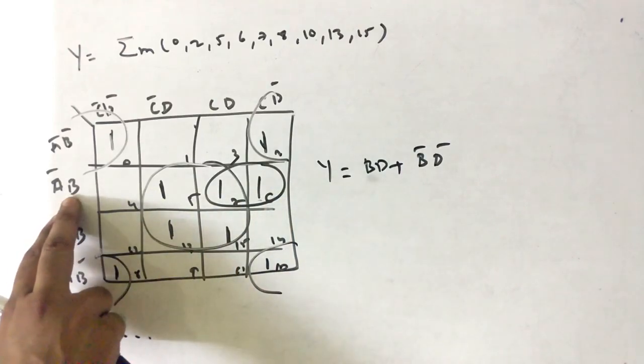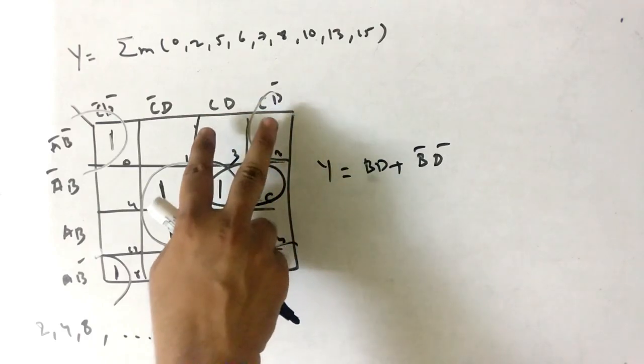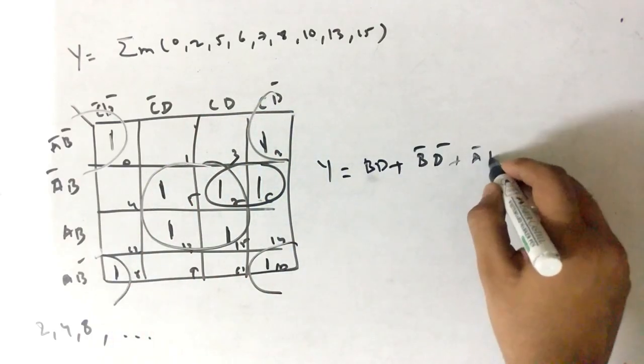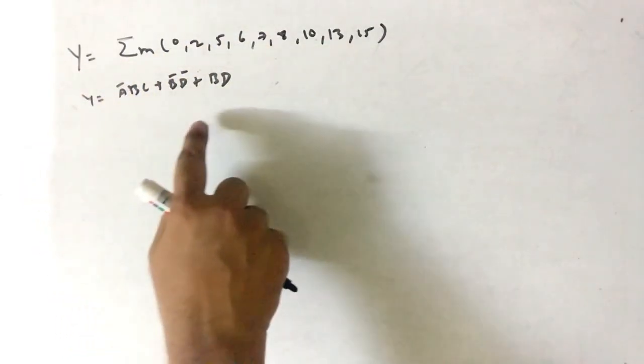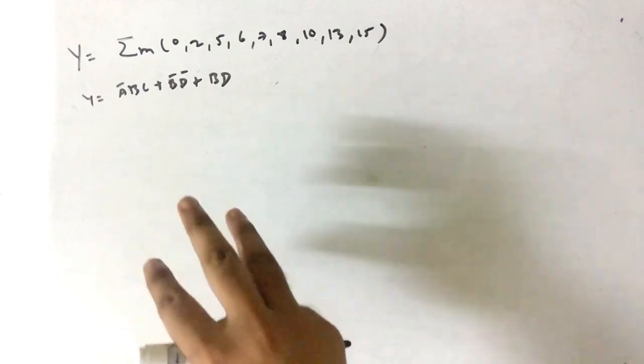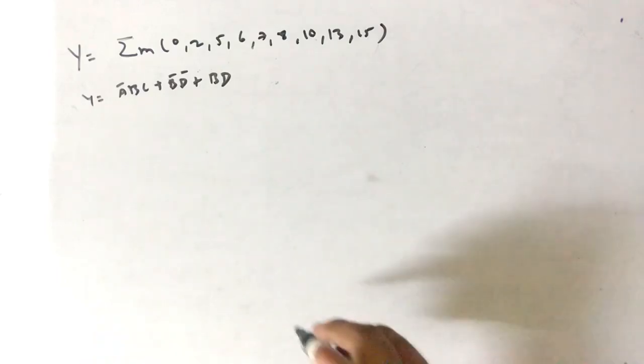What is the answer? For here we have a bar b, and here you can see that the common is c. So a bar b c. This is the answer by using the K-map. Now we have to implement this using the basic gates.